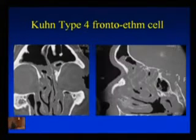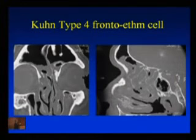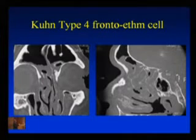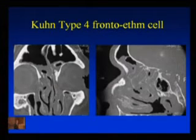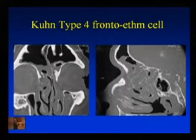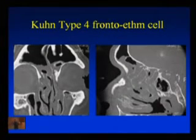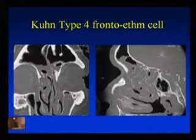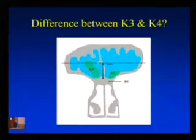Looking at the parasagittal scan through the other side, this cell has pushed its way up from the anterior face of the bulla — it's actually a bulla frontalis cell that has pneumatized along the skull base. On the coronal scan, you've just cut off the tip of that cell, so it looks like an isolated cell in the frontal sinus, but it isn't — it's a cell pneumatized from the frontal recess rather than truly isolated to the frontal sinus.